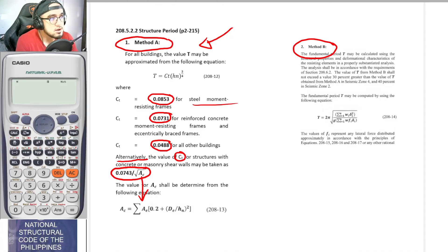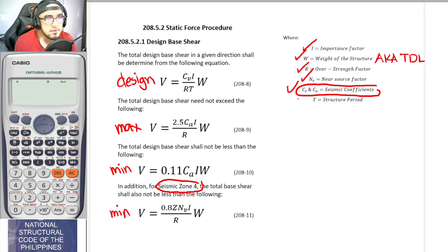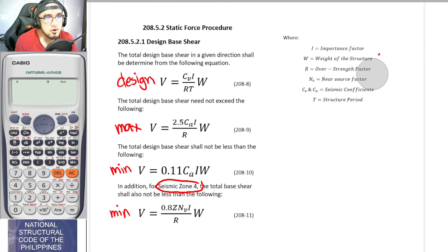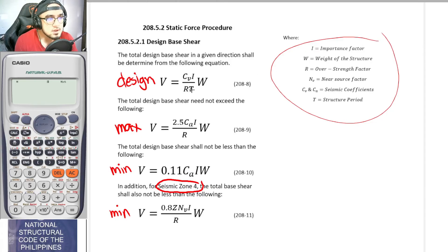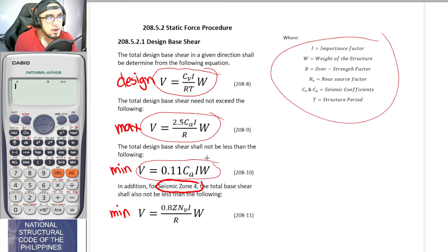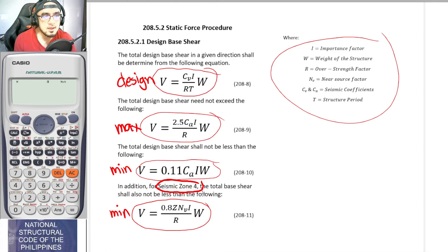Once you have all the parameter values, substitute them into the design base shear equation, compare with the maximum and minimum equations, and if the structure is in zone 4, also compare with the zone 4 minimum. That concludes this introduction video. In the next video, we will solve an example problem.